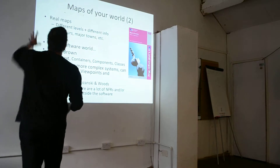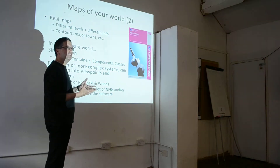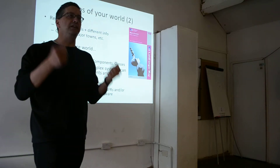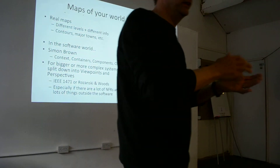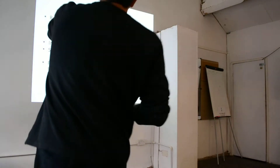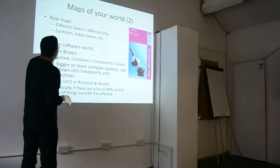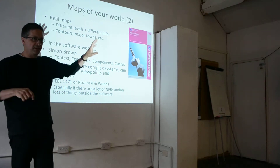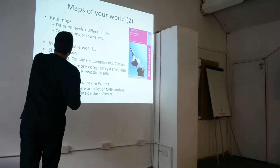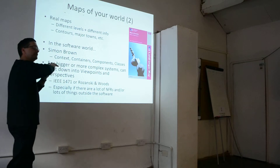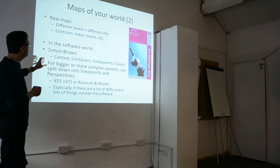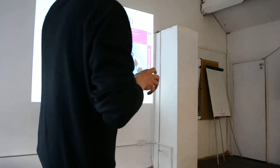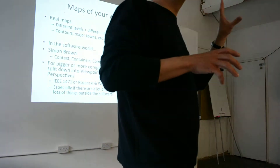Maps of your world: real maps have different levels with different information. Your OS Landranger can have contours; your road atlas — like a sat-nav but on paper — will just have towns. In the software world, if you haven't read Simon Brown's work on context, containers, components, and classes, please go and read it — it's good stuff. For bigger, more complex systems with lots of NFRs or a lot outside your software, viewpoints and perspectives can help focus on important aspects like security and scalability. It's an IEEE standard, but don't let that put you off. Woods and Rozanski's book on this is very good.